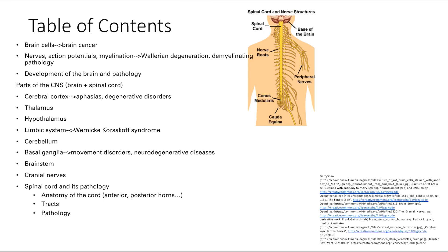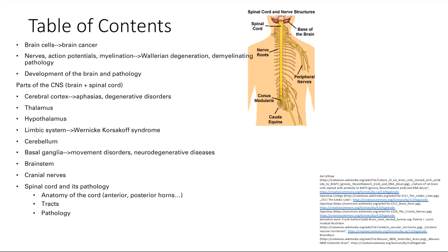Next we're going to follow the brain stem down and it becomes the spinal cord, which is also part of the central nervous system. The spinal cord is going to supply nerves to the whole body, and we're going to look at the anatomy and everything that can go wrong there. Next is the vasculature of the brain — there are a couple of key vessels that supply the brain. We're going to see what happens when they become occluded, which is basically a stroke. We'll also look at other possible bleeding that can go wrong in the brain.